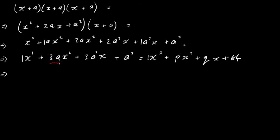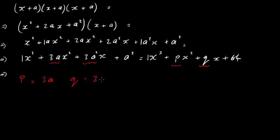Here we've got 3a in front of the x squared on the left, and p in front of the x squared on the right, so p is equal to 3a. In front of the x, we've got 3a squared on the left, and q on the right, so q is equal to 3a squared. Finally, the constant term independent of x: a cubed is equal to 64. So we have three equations and three unknowns, and we're going to solve for them.